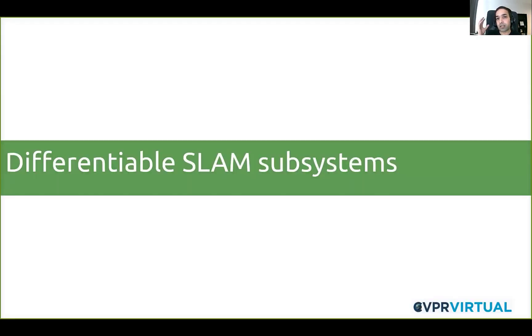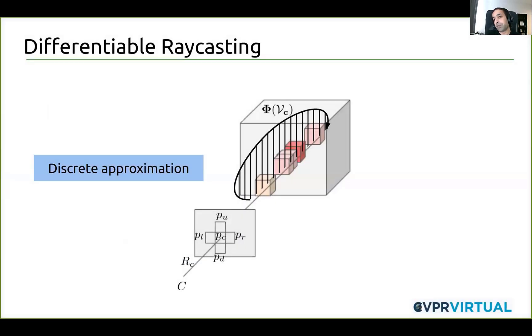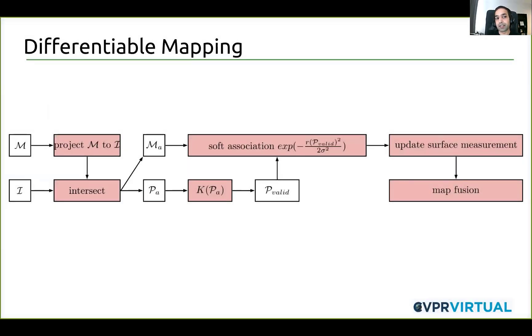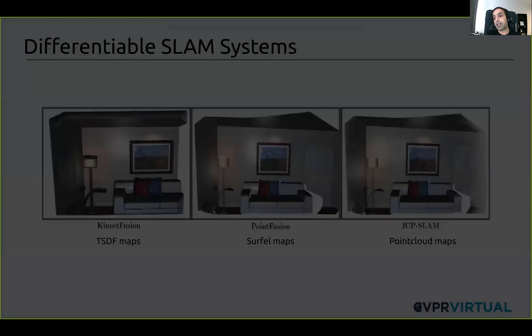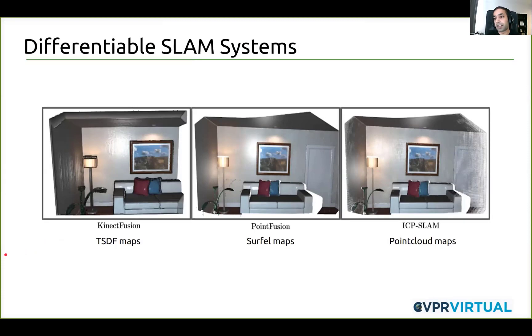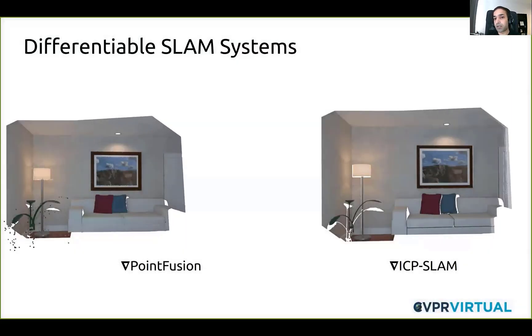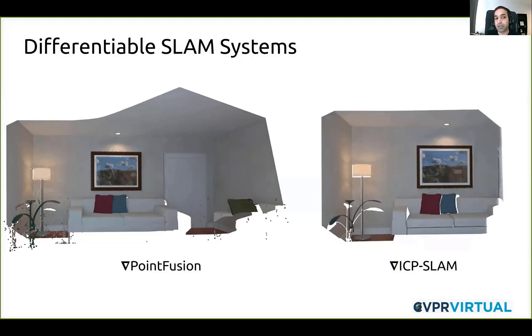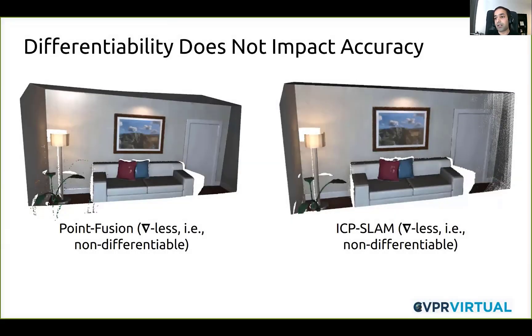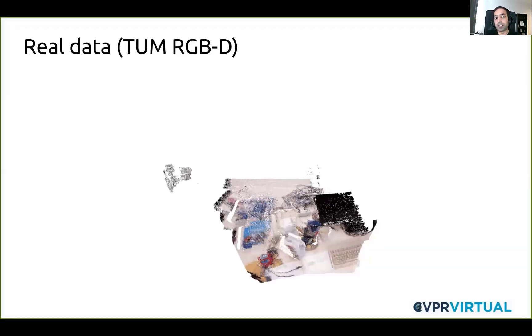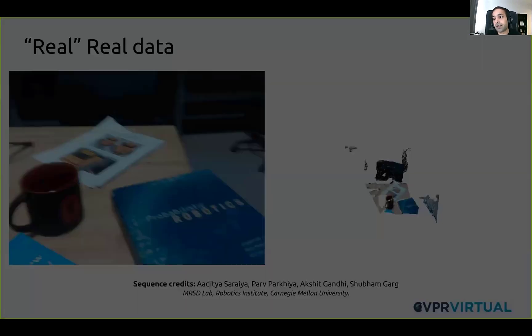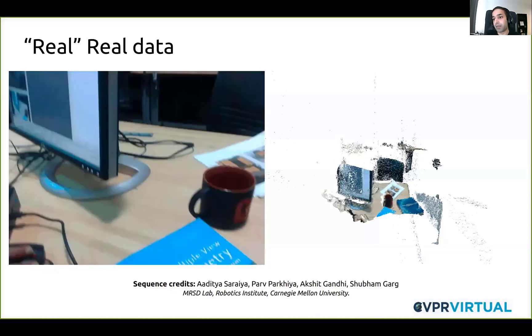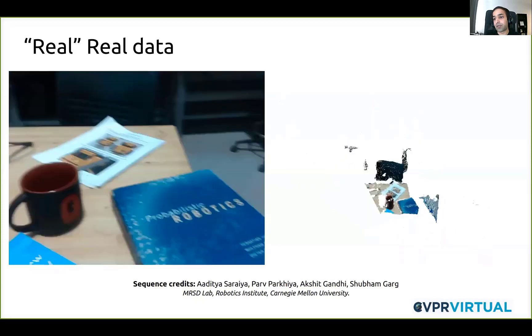We use GradLM as a key building block to realize several differentiable SLAM systems. There are also other subsystems like differentiable raycasting and mapping that I won't be able to cover in this talk. We're able to realize an exhaustive set of SLAM systems that work across a variety of map representations like truncated signed distance functions, surfaces, or point clouds. These differentiable SLAM systems run entirely on the GPU and their accuracy is very similar to non-differentiable counterparts. We've evaluated GradSLAM on real sequences from the TUM RGB-D benchmark, which has significant amounts of sensor noise, and also on a real sequence captured from an Intel RealSense camera.